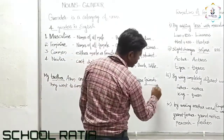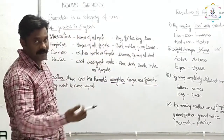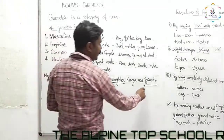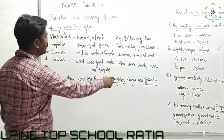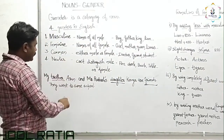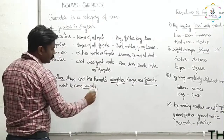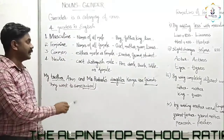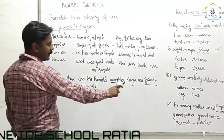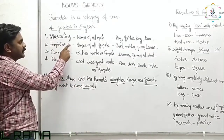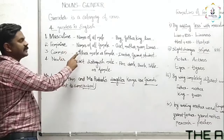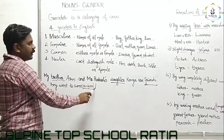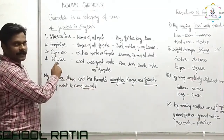Brother comes in the masculine gender category, and daughter comes in the feminine gender category. Next, 'friends' — friends can be either male or female, so we can call it a common gender. And the last one, 'school' — school is a non-living noun, so school will come in the neuter gender category.